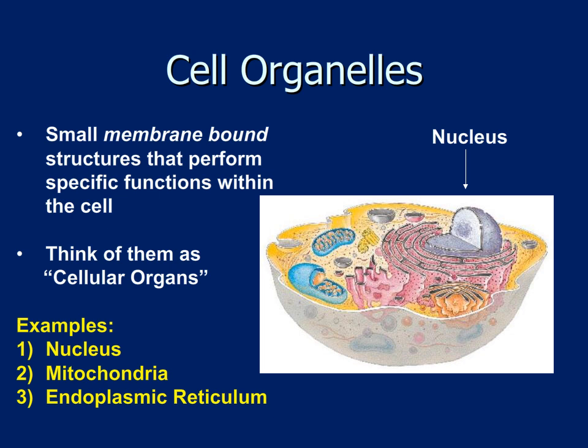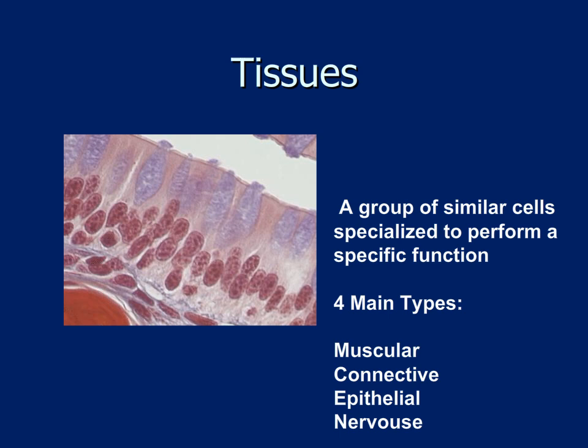Going one level beyond cells, we have tissues — groups of similar cells specialized to perform a specific body function. There are four main types: muscular tissue, which helps muscles contract and generate movement; epithelial tissue, which covers body surfaces and lines body cavities (such as the skin); connective tissue, found beneath epithelial tissue and including blood, bone, and cartilage; and nervous tissue, which transmits information in the form of electrical impulses throughout the body, allowing organs to communicate with one another.